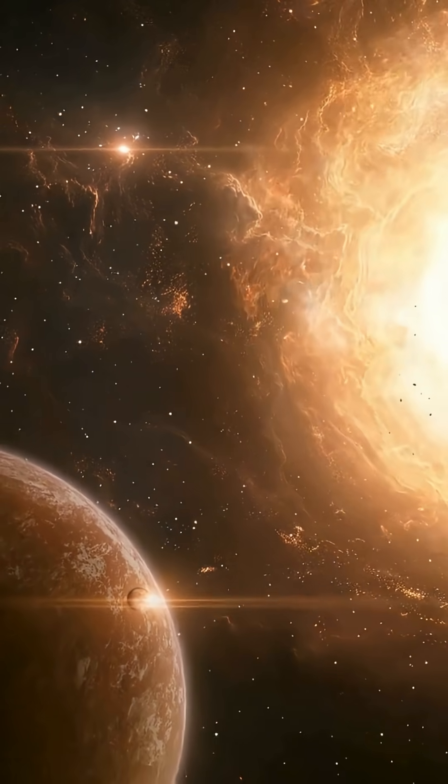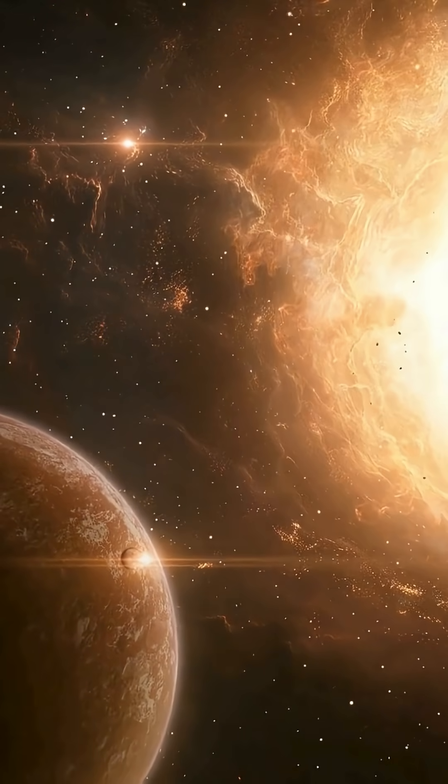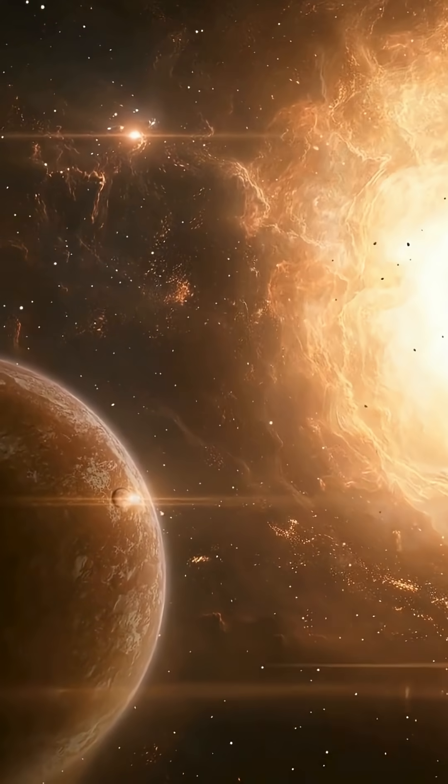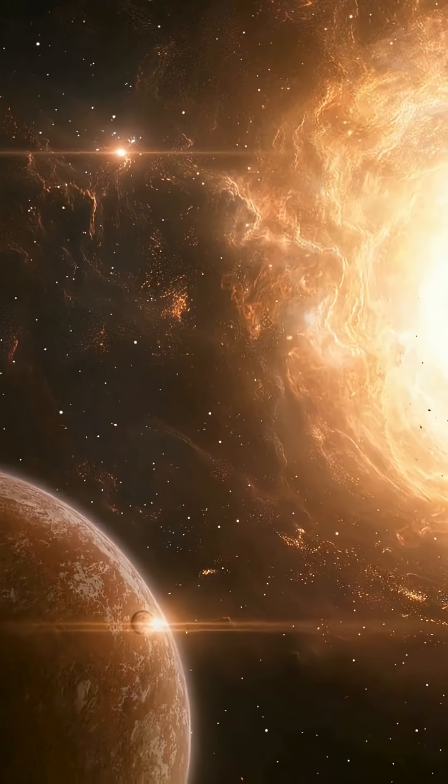If the Earth survives this red giant phase, it will move away from the sun about twice as far as it is now. The new orbit will take it far beyond the habitable zone of the white dwarf.